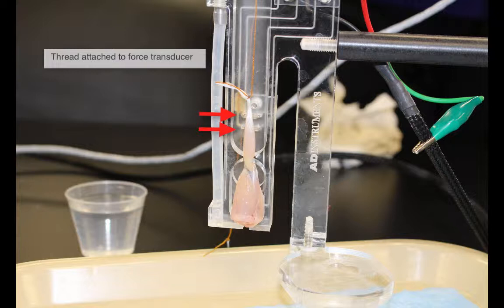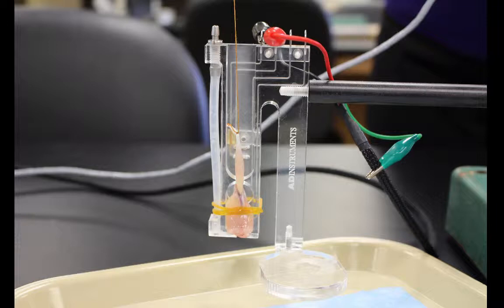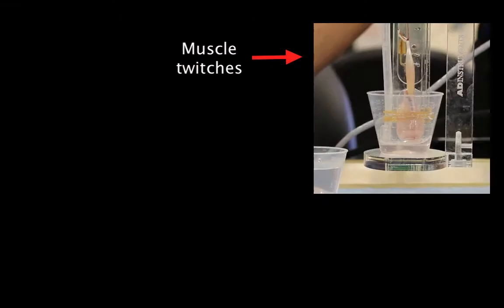The muscle minus the tibial fibula and the foot is then placed in the muscle holder against two wires which will deliver the stimulus voltage. An elastic band is placed around the muscle to hold it firmly in place against the wires, and then finally a cup is placed underneath the apparatus so it can be bathed with ringer solution.